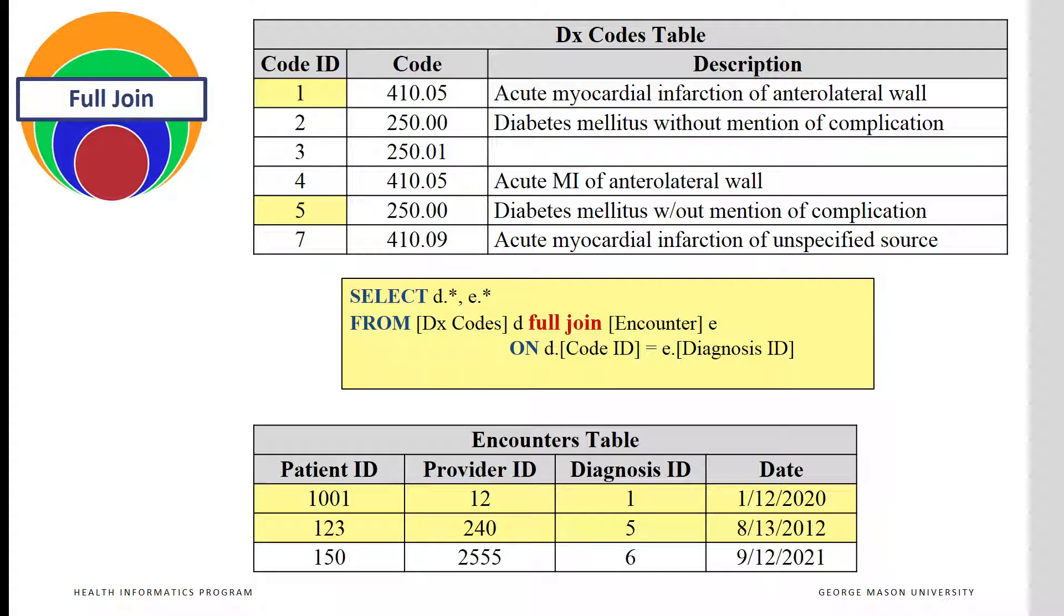For code ID 1 and 5, the encounter of patient 1001 and patient 123 are listed. For code IDs 2, 3, 4, and 7 are included, but no encounter information is listed for these codes. Null values are provided.